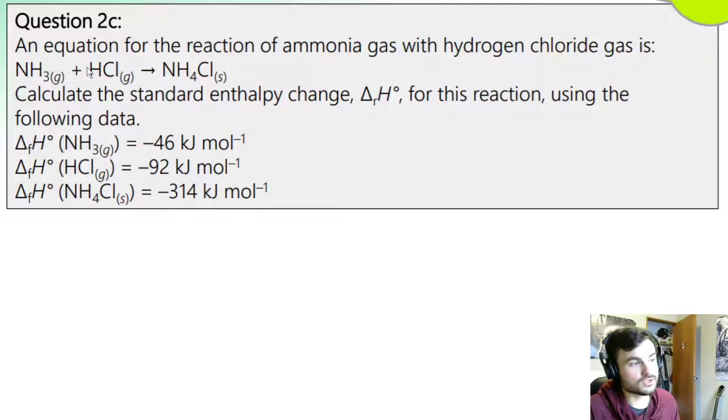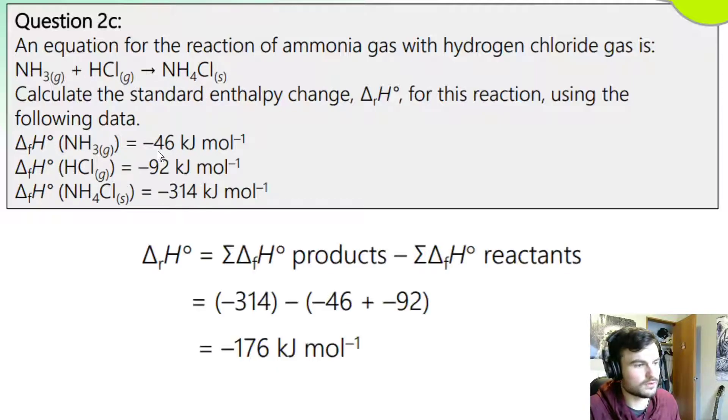Products minus reactants. We add these both up. Negative 314 minus our reactants. Our reactants are minus 46 and minus 92. And that gets us a value. Our value is negative 176 kJ per mole. Notice it's negative so it's exothermic. We've calculated the enthalpy change based on this information.